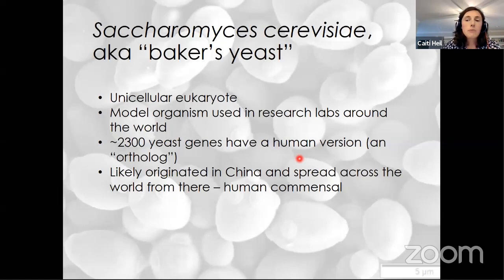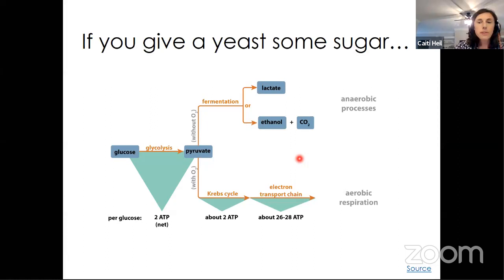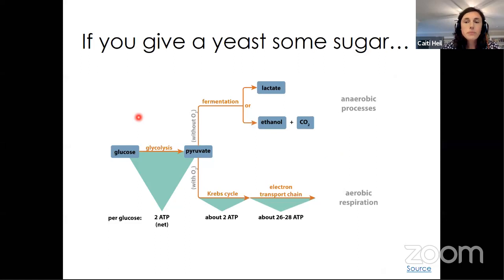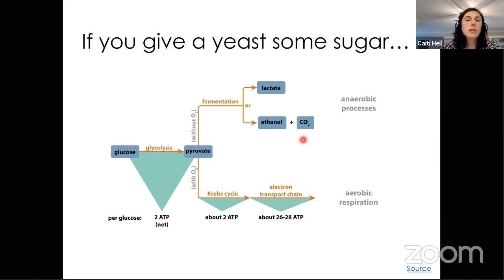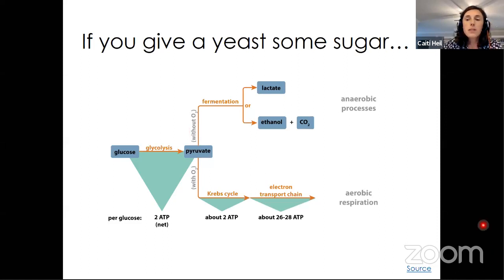Recent evidence shows us that Saccharomyces cerevisiae likely originated in China and spread across the world from there, often associated with humans. The reason for this association comes down to its metabolic pathway. S. cerevisiae needs sugar to grow — it eats simple sugar, glucose. In the presence of oxygen, this produces a lot of cellular energy in the form of ATP. But without oxygen, this turns into ethanol and carbon dioxide. In the wild, the rapid production of ethanol kills most other microbes, a very successful competitive strategy. And of course, the production of ethanol and CO2 has made yeast instrumental in the evolution of human society.